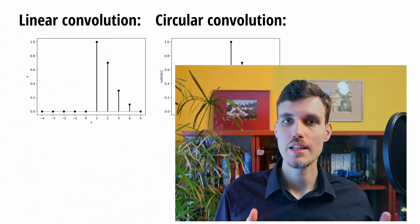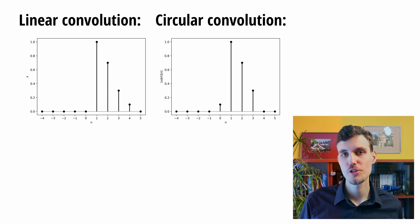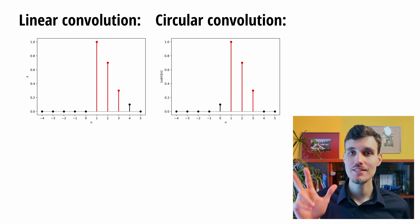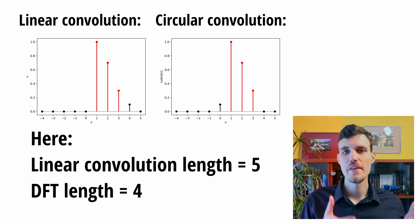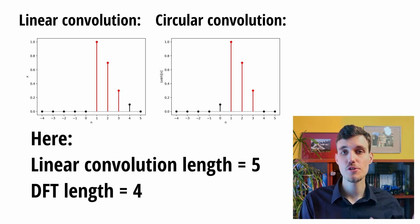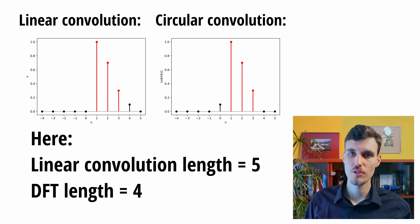For example, in the circular convolution of our signals x and h, the last three samples are valid samples of the linear convolution. The number of samples of the circular convolution that are valid samples of the linear convolution